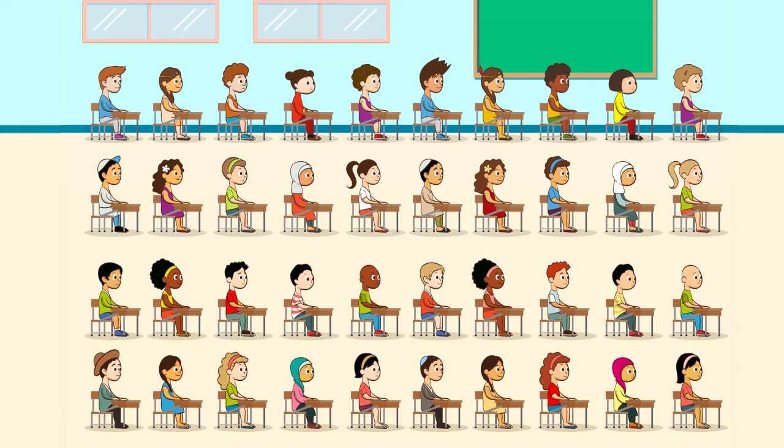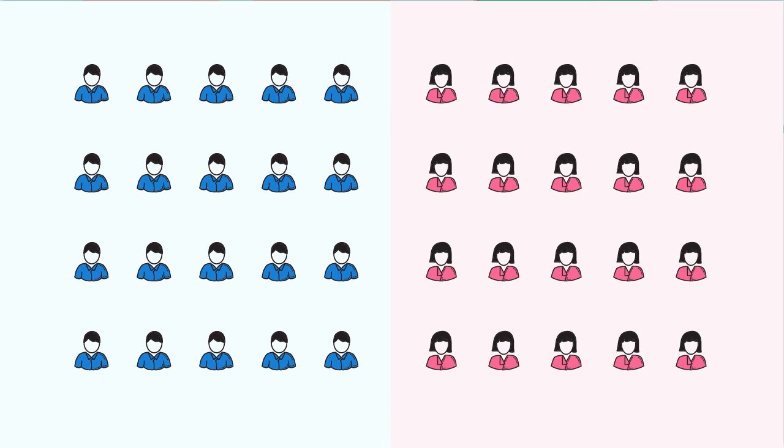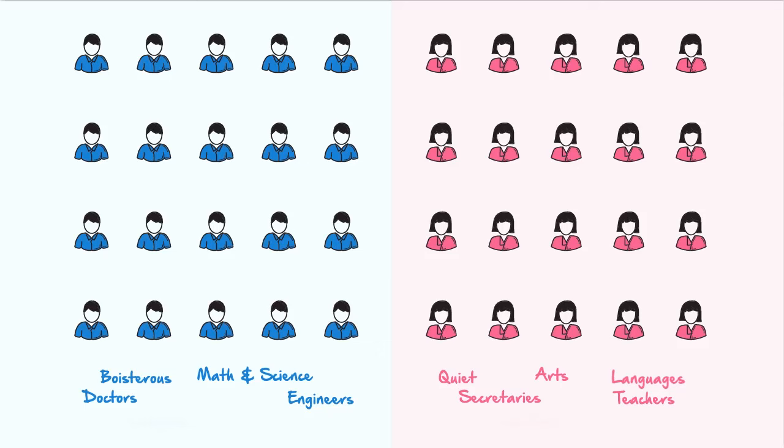However, instead of seeing diverse individuals, many teachers simply see 20 males and 20 females. And when teachers think of children only in terms of their gender, they start to make all sorts of assumptions about them — about what they like, what they're good at, and even what they should end up doing when they leave school.